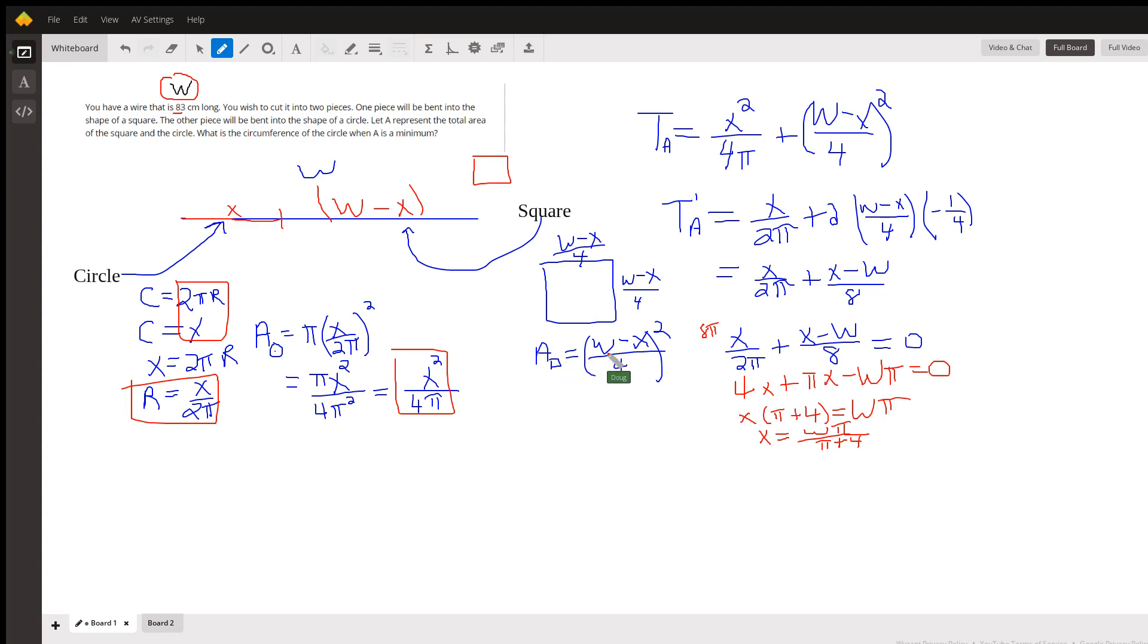So the area of the square is (W - x)/4, the quantity squared. So here is an expression for the total area in terms of x. The area of the square plus the area of the circle.